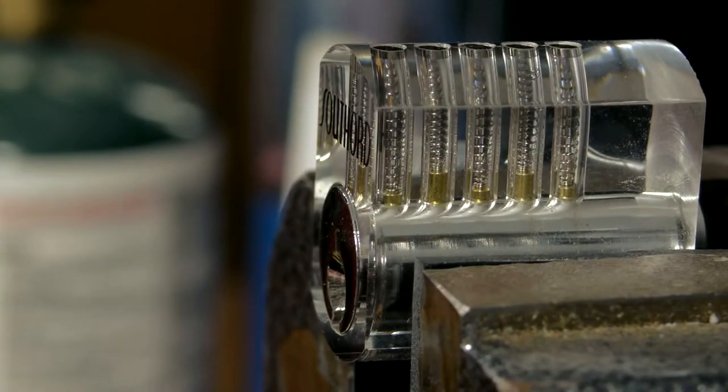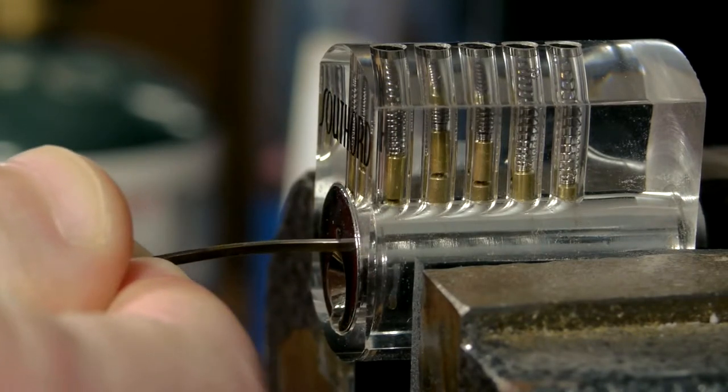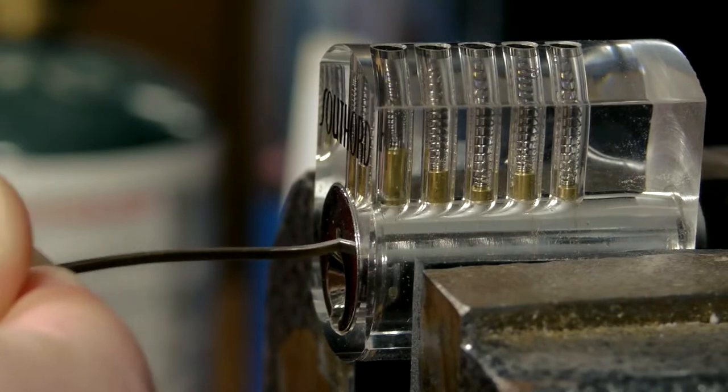The first thing we need to learn is how these locks work. In a pin and tumbler lock like this, which is the most common type of lock in use today, a series of pins cut at different lengths prevent the barrel of the lock from turning unless each pin is pressed up to the exact right height.